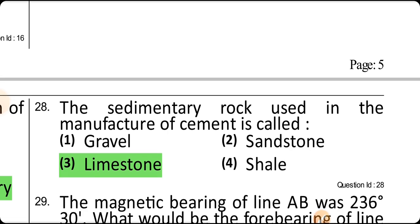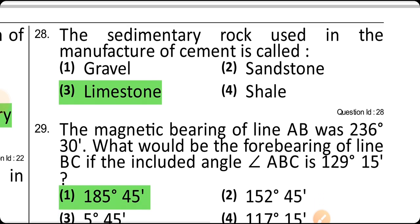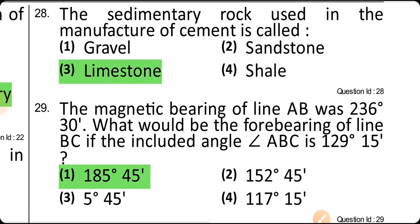The sedimentary rock used in the manufacturing of cement is limestone. That is why the lime content in cement is more — it is around 63%.